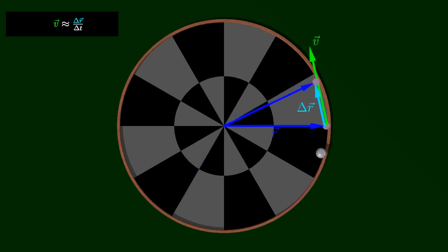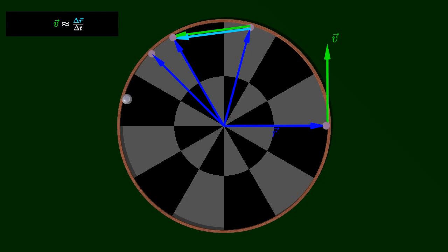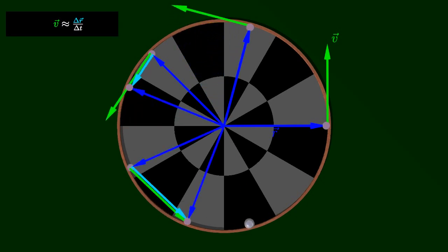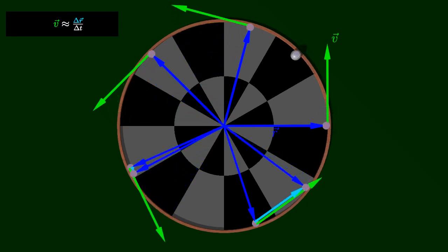The instantaneous velocity is then the limit of this estimate as the length of the short time interval goes to zero. Note that the direction of the velocity vector is always tangent to the circle.